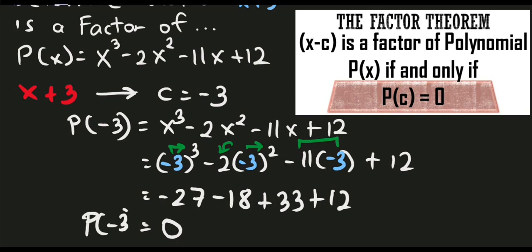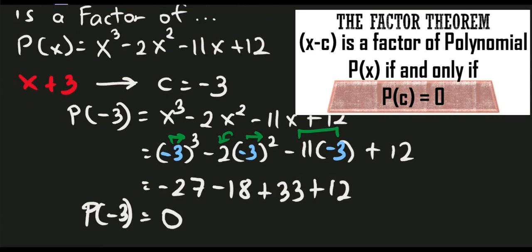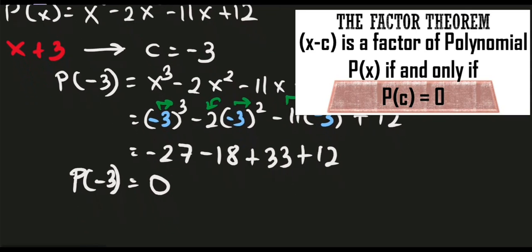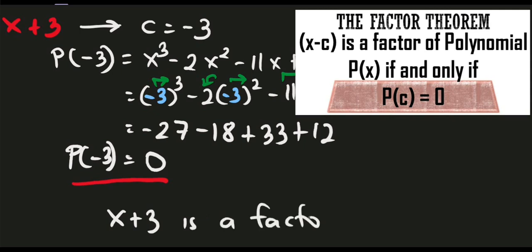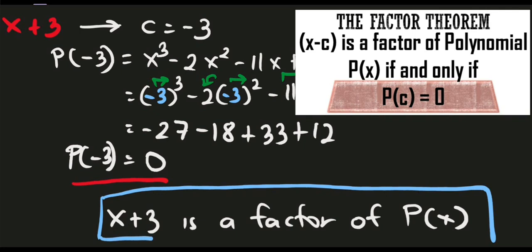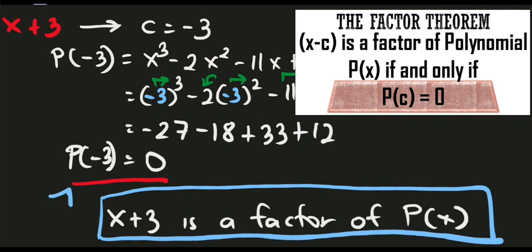Since P sub negative 3 is equal to 0, the conclusion is that x plus 3 is a factor of p of x. That is our final answer. The proof is because P sub negative 3 is equal to 0. That is the concept of factor theorem.